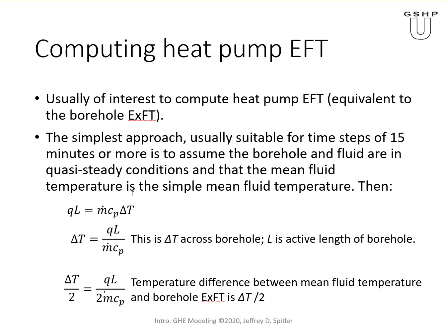We can solve this energy balance for delta T: it equals Q·L divided by ṁ·Cp, the total heat input divided by the mass flow rate times specific heat. Then delta T over 2 is the temperature difference between the simple mean fluid temperature and the borehole exiting fluid temperature, given by this expression.